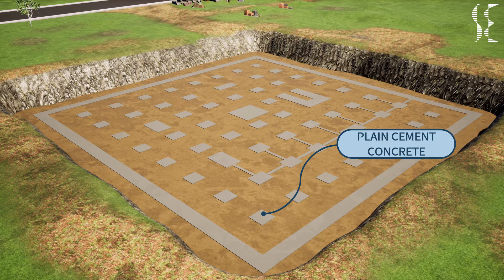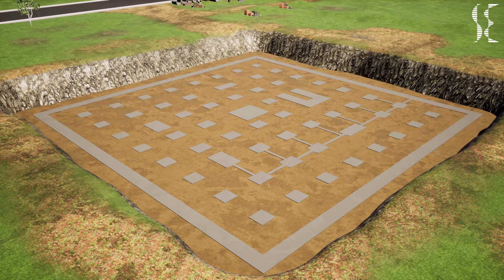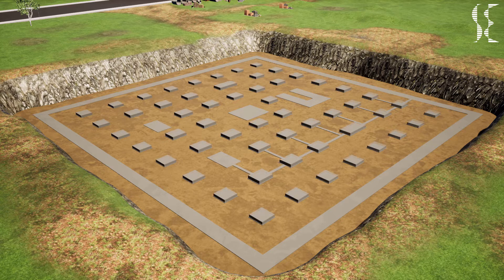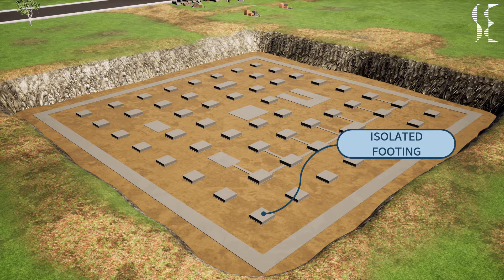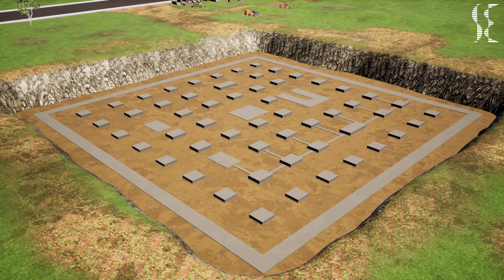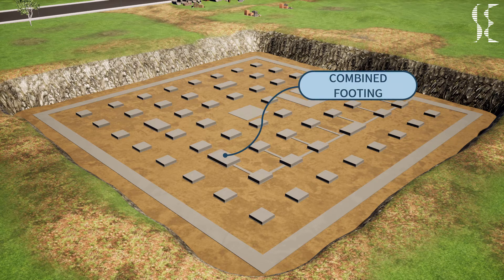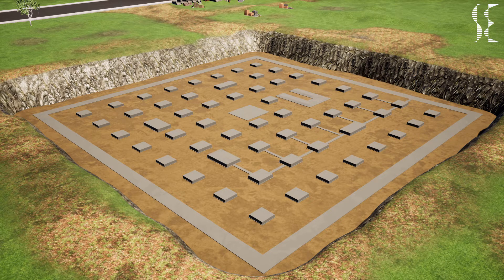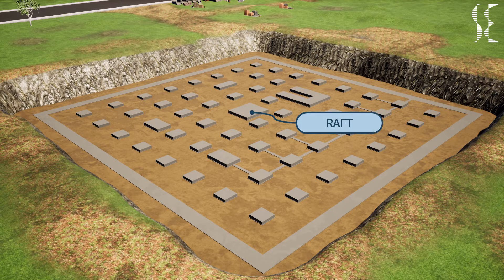After PCC, the foundation is laid, which takes load from above and transfers it to the ground below. Various kinds of footings are used in accordance with loading, site conditions, soil properties, and design. In this 3D model, first we have isolated footings, then combined footings which hold two or more columns, then raft or mat footings, and finally strip footings which in this case are provided to basement walls.